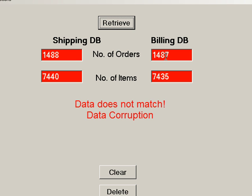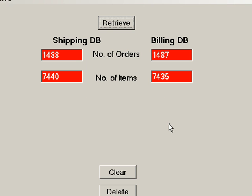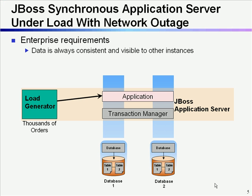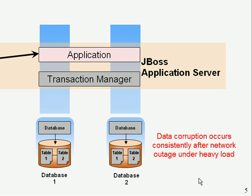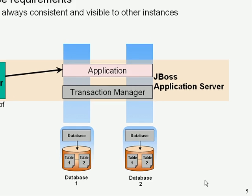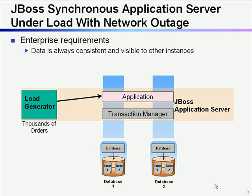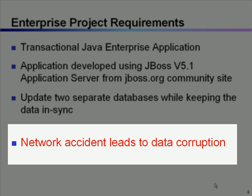Well, guess what? This network accident led to corrupt data. One database has one less order than the other. This is very surprising. The application was designed to be transactional and the application server is supposed to manage all the transactions so that the data is in sync. I tested this situation over and over again — unbelievably, this problem happens consistently and I'm left with a data corruption problem.